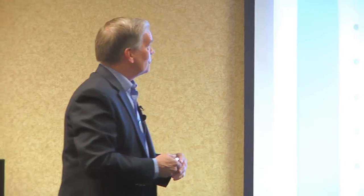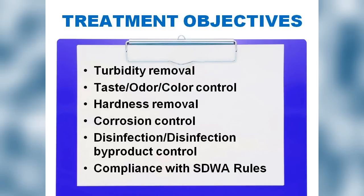As a result of understanding water quality and the regulations we need to meet, what are the objectives we have in surface water treatment? We want to remove turbidity, do taste and odor control, potentially do hardness removal if the source has high hardness, do corrosion control in compliance with the lead and copper rule, and ensure disinfection is done safely without creating toxic byproducts — disinfection byproduct control. All of these removals enable compliance with the Safe Drinking Water Act.